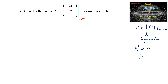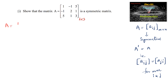That is, a matrix Aij is equal to Aji for every i and j. So here A is equal to 1, minus 1, 5, minus 1, 2, 1, 5, 1, 3.